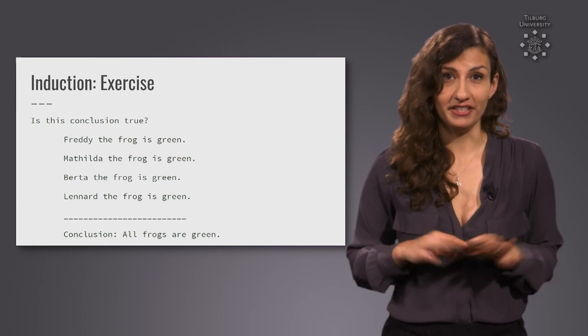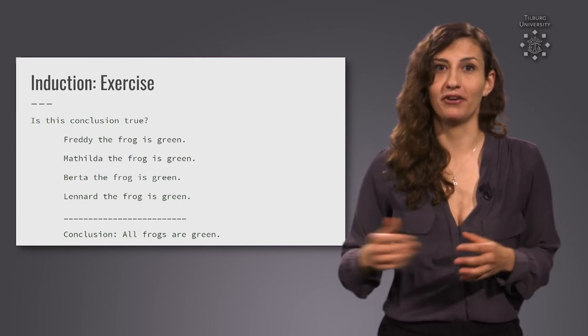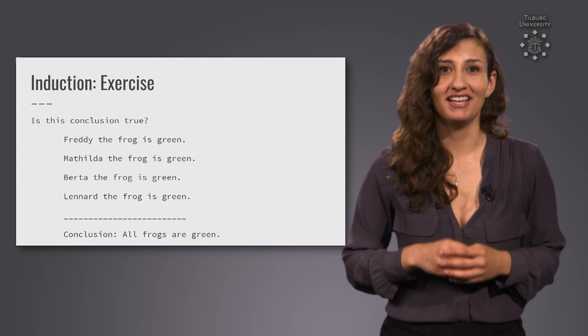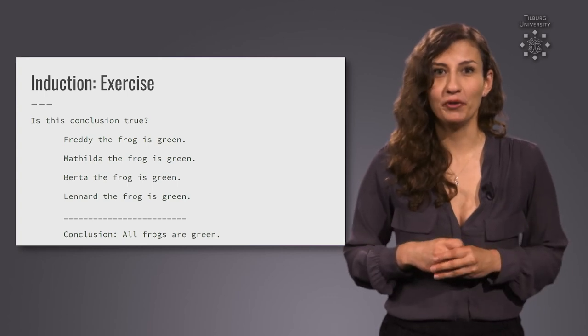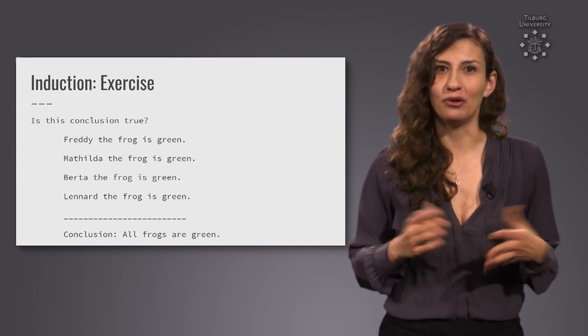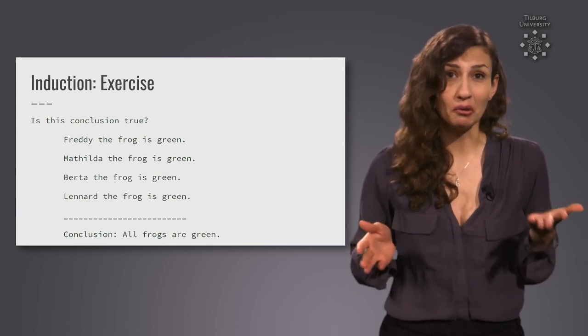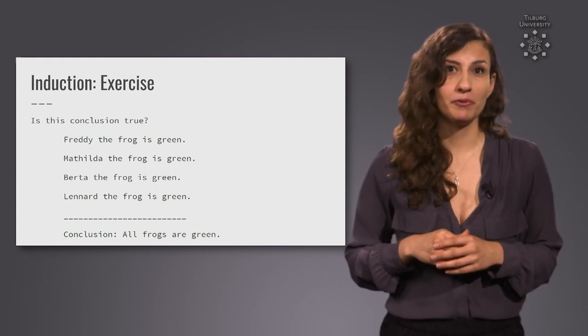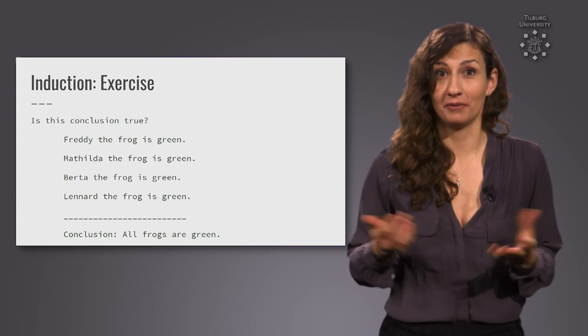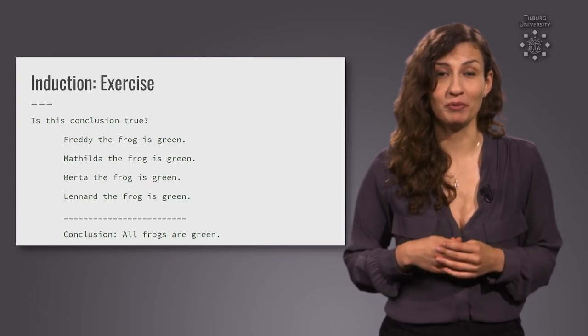Given the observation that Freddy the frog is green, Matilda the frog is green, Berta the frog is green, and Leonard the frog is green, would it be permissible to conclude that all frogs are green? Again, no, not really. As soon as we would find out that José the frog is not green, the conclusion would be proven false.